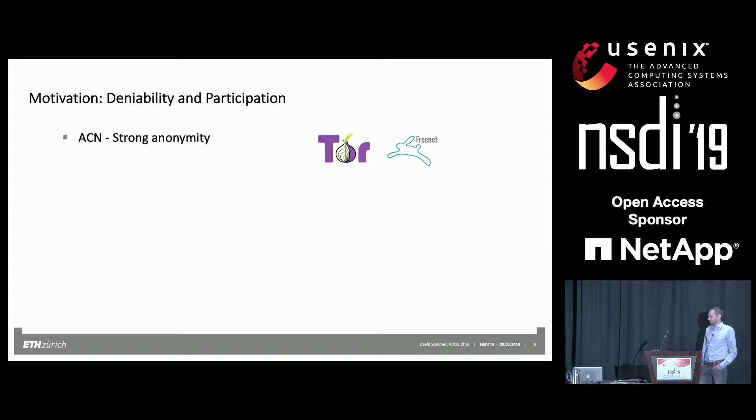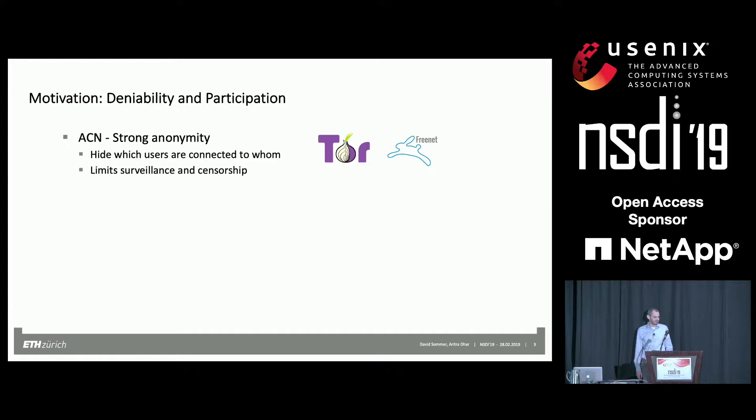But why not stick to very well-known constructs like anonymous communication networks, or ACNs? There are already well-known ACNs such as Tor, I2P, and Freenet. All of them are freely available for download. ACNs provide various means to remove the connectivity between the sender and receiver, so your ISP or government doesn't actually know which websites you are visiting. They are pretty good at limiting surveillance and censorship up to a certain limit. So why not just stick to ACNs?